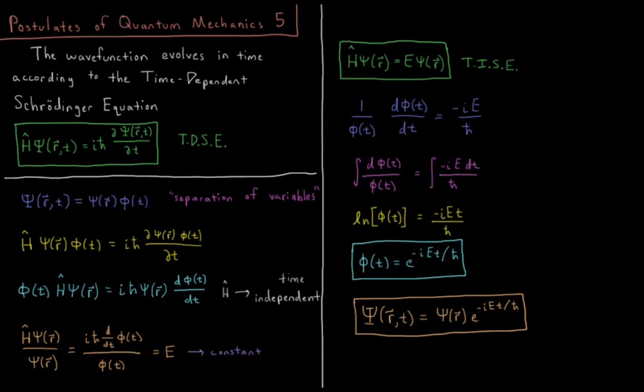Postulate 5 of quantum mechanics is that the wave function, psi, evolves in time according to the time-dependent Schringer equation, or TDSE.